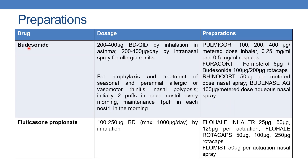The next drug is budesonide. The dose is 200 to 400 mcg twice or 4 times daily by inhalation for asthma, and 200 to 400 mcg per day by intranasal spray for allergic rhinitis, for prophylaxis and treatment of seasonal and perennial allergic or vasomotor rhinitis and nasal polyposis. Initially two puffs in each nostril every morning, maintenance one puff in each nostril in the morning. The preparation Pulmicort is available in 100, 200, and 400 mcg per metered dose inhaler and 0.25 mg per ml and 0.5 mg per ml respules.